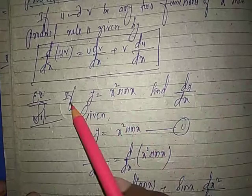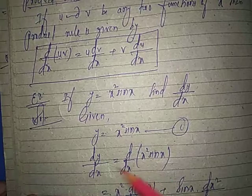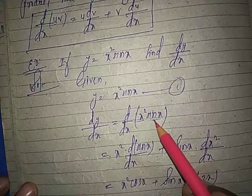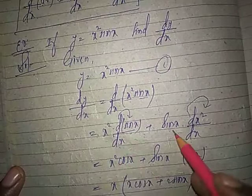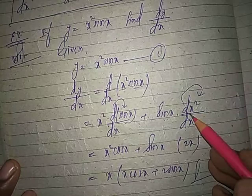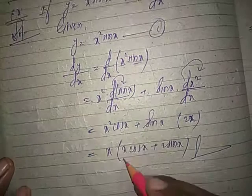Example: y equals x square sin x, find dy by dx. Distribute the differential operator, dy by dx on both sides. Take u as one and v as the other. u remains, differentiate v: d by dx of sin x is cos x. Plus v remains, differentiate u: d by dx of x square is 2x. So dy by dx equals x square cos x plus 2x sin x. Taking x common, this equals x times cos x plus 2 sin x.